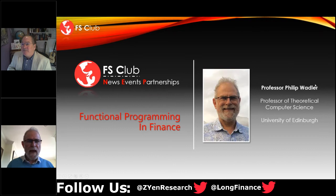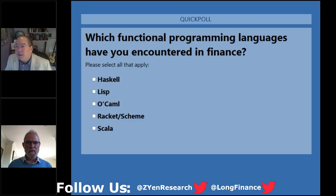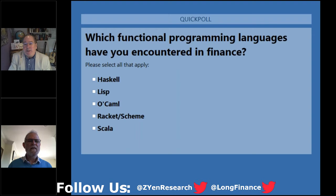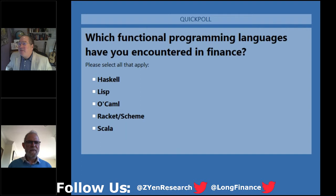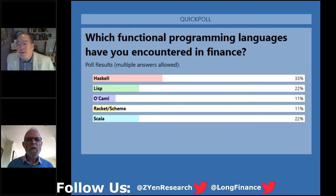Before the handover, we conduct a survey: which functional programming languages might you have encountered in finance? Please select any that apply — Haskell, Lisp, OCaml, Racket or Scheme, or Scala. Over half the audience has voted. 60% of the audience voted, and you can start to see the range: of those who are programming, half are using Haskell, a third Lisp, and a third is split amongst the other three.